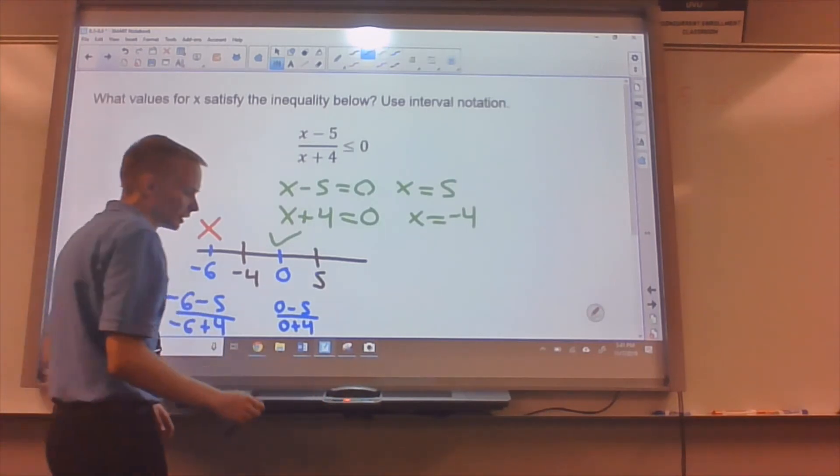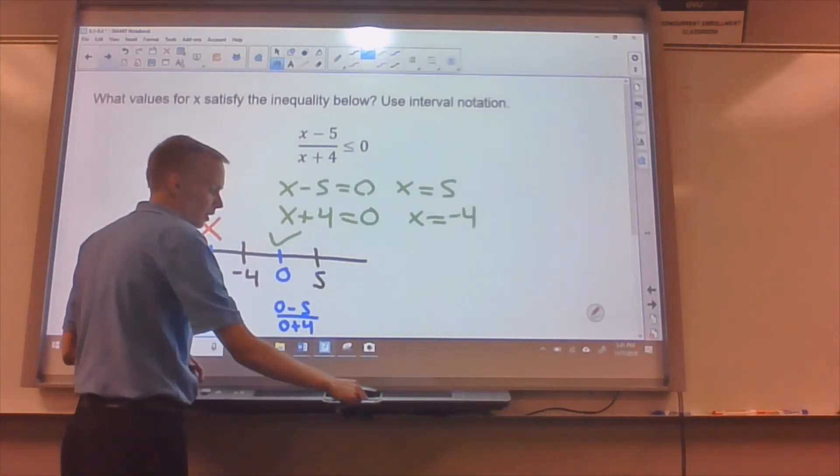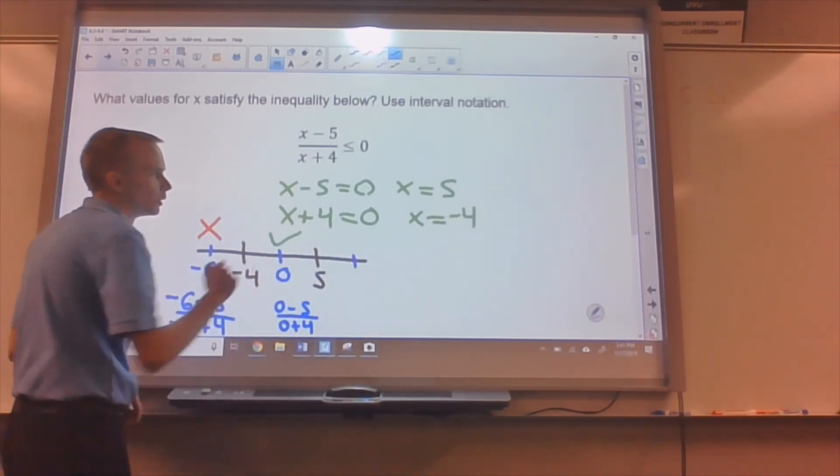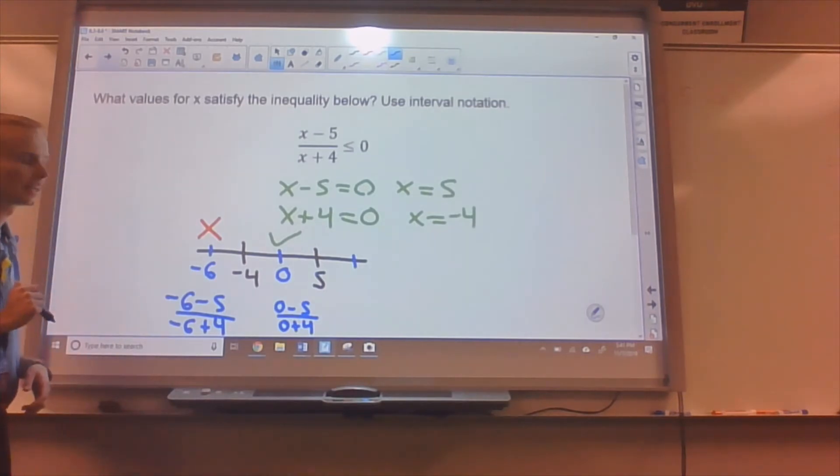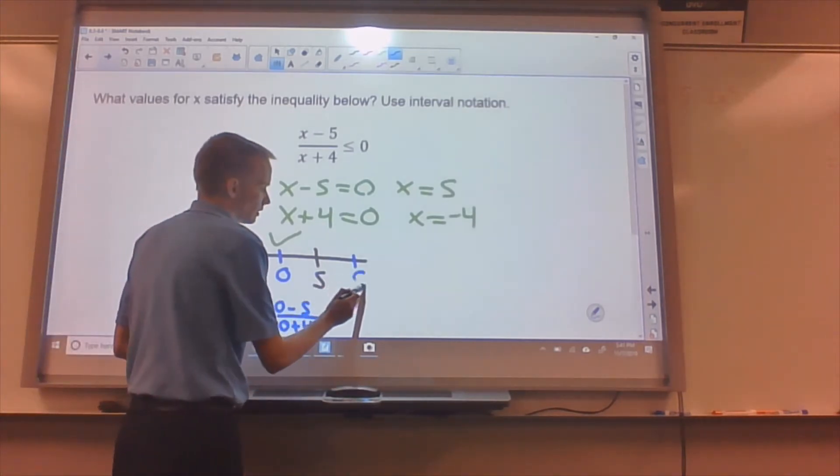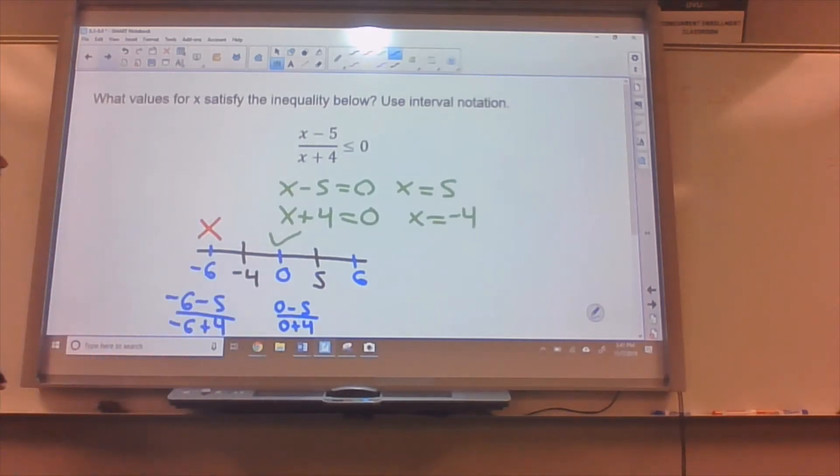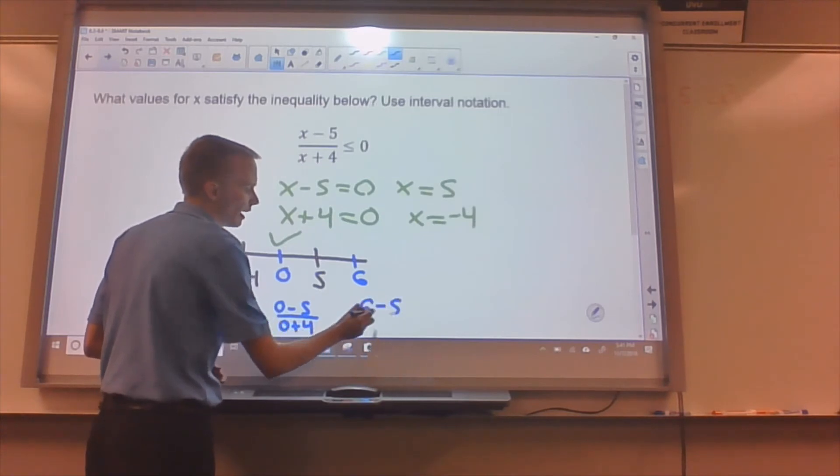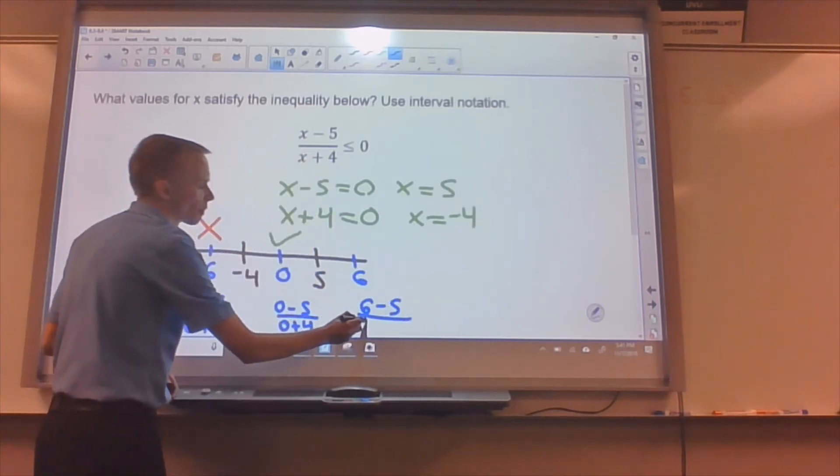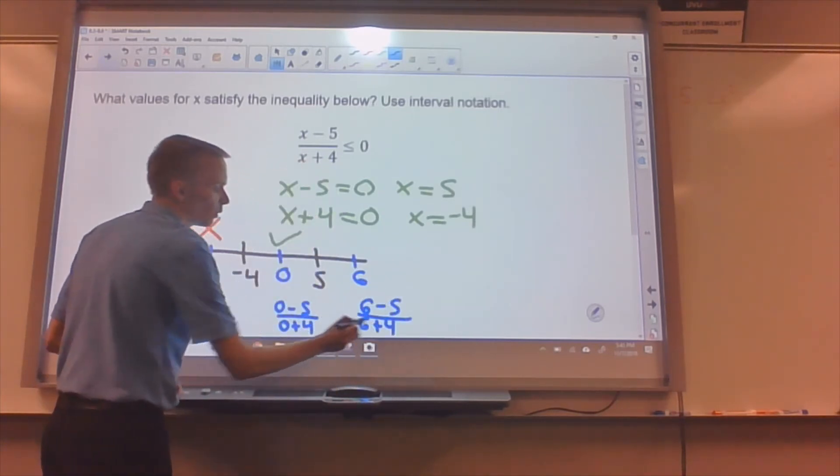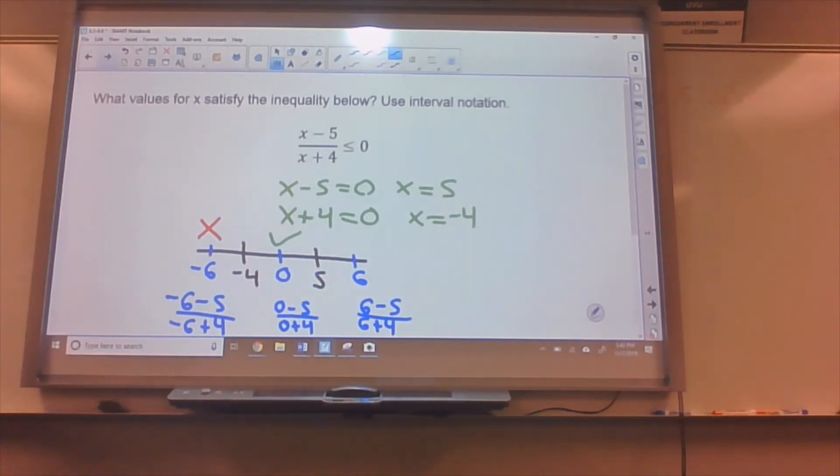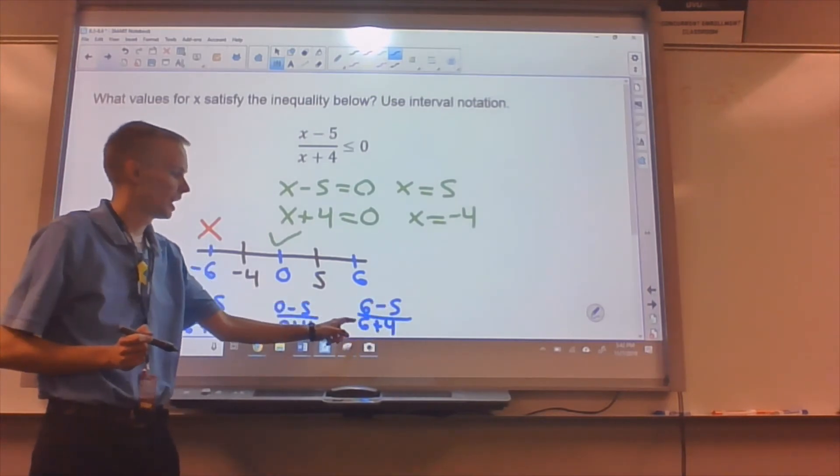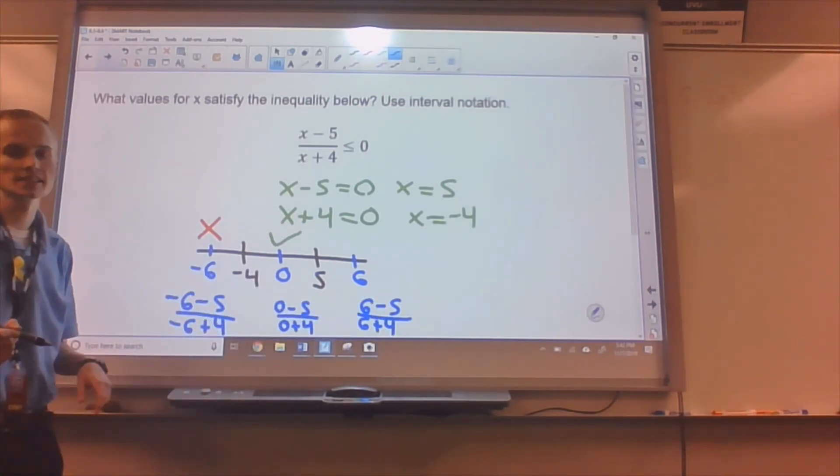Now, lastly, we want to check over here, bigger than five. We probably think it won't be true over here, but we can just check and make sure. Let's try six. Six, that seems like a nice thing to put in. So I'll do six minus five over six plus four. Just replacing x with six in the equation. Six minus five is positive one. And six plus four is positive ten.